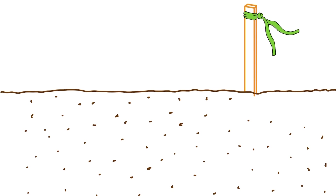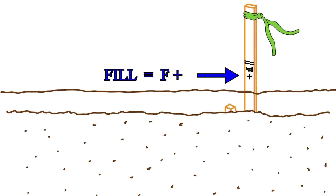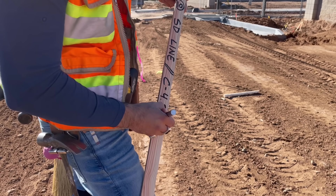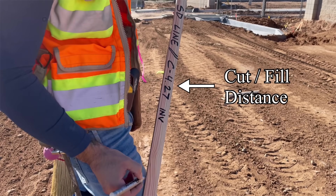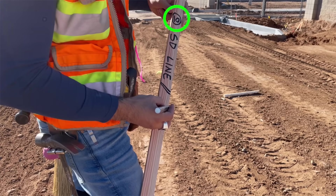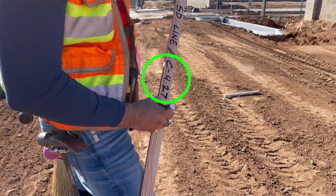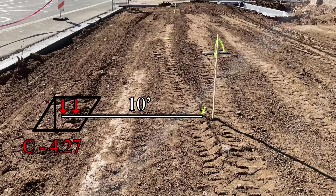We telegraph direction by starting with C- for cuts and F- for fills, and then the distance. In this case we've set a nail and now we understand that from the top of the nail we go over 10 feet for our offset, and then cut down into the ground an additional 4.27 feet to get to the design location of our storm drain line.